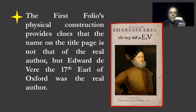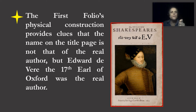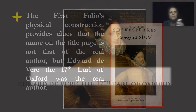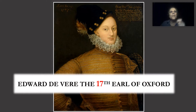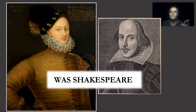In conclusion, the first folio's physical construction provides clues that the name on the title page is not that of the real author, but Edward de Vere, the 17th Earl of Oxford, was the real author. This is strong evidence that Edward de Vere, the 17th Earl of Oxford, was Shakespeare.